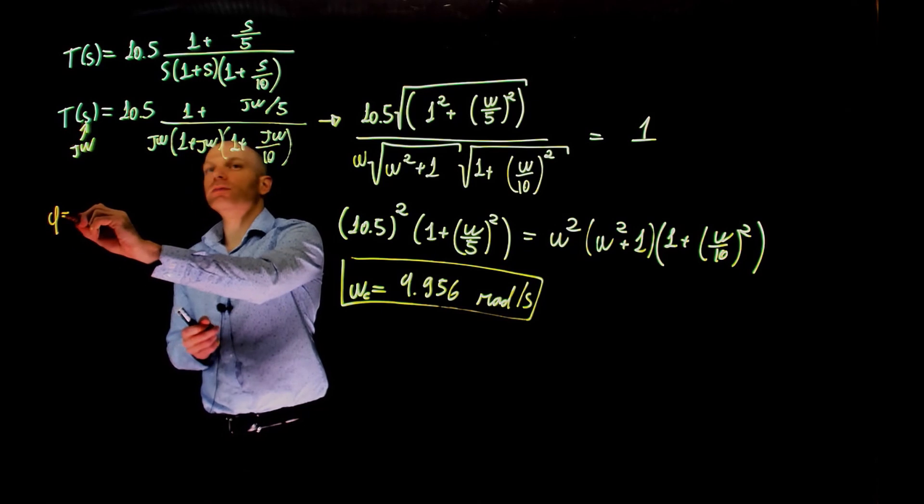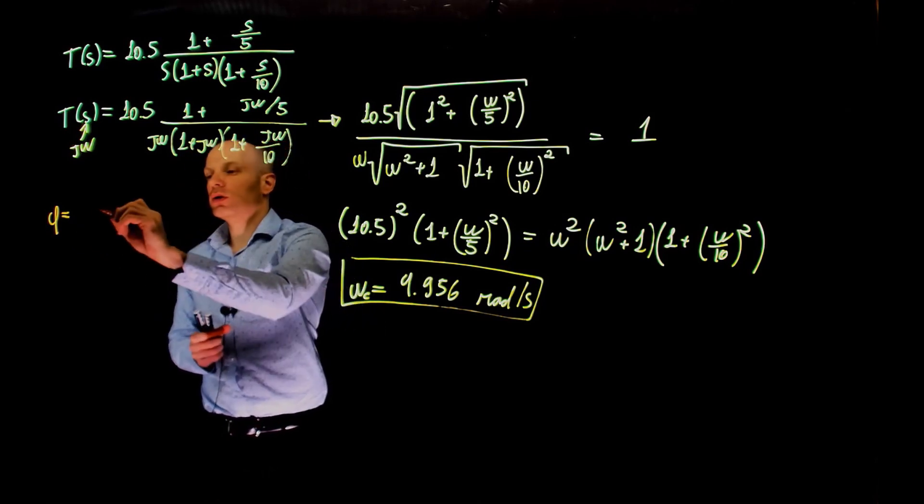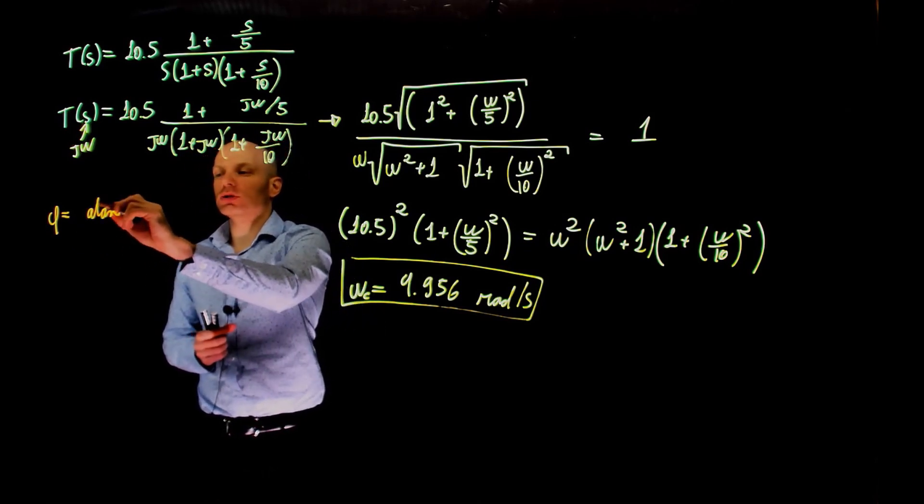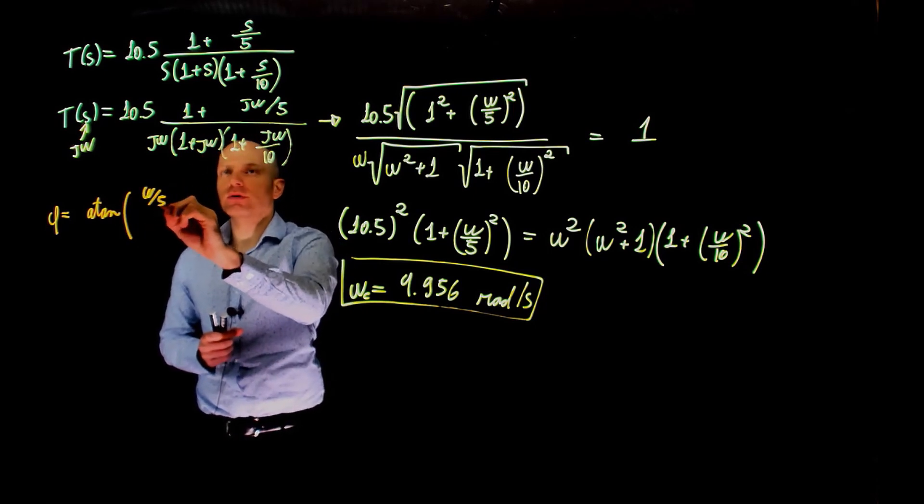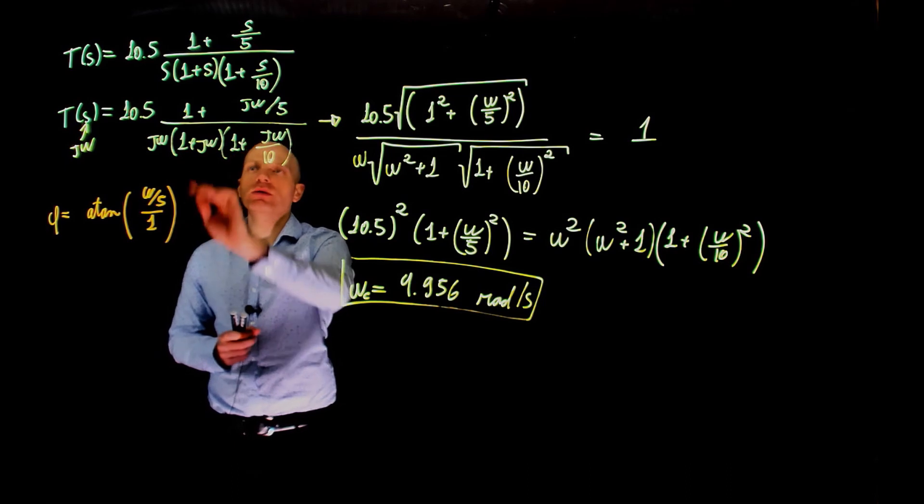The phase will be the phase of all zeros. In this case, inverse tangent of the imaginary part omega over 5 divided by the real part 1. This is for the zero.